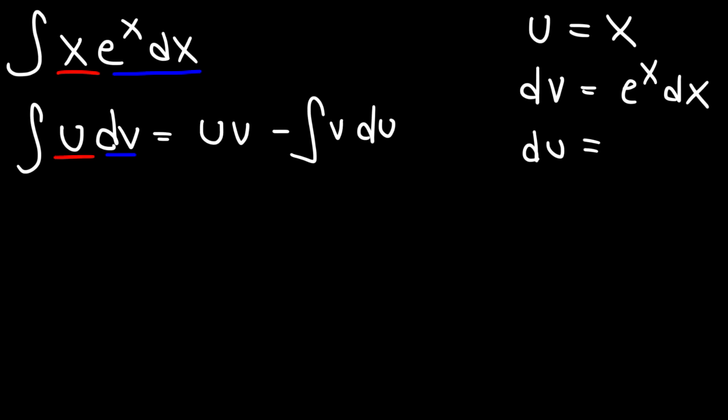du, the derivative of x, is going to be dx. And v, the integral of dv is v, which is the integral of e to the x dx. And the integral of e to the x is just e to the x. And so that's going to be v.